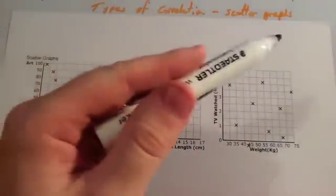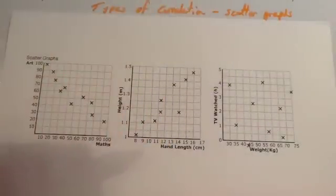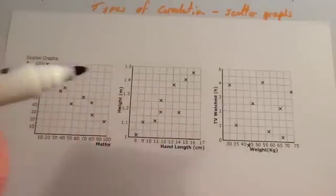Okay, we're now going to look at types of correlation on scatter graphs. So here we've got three different types of scatter graph.